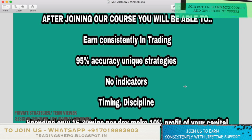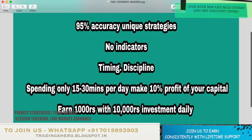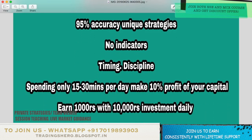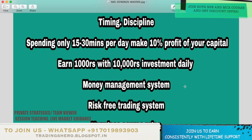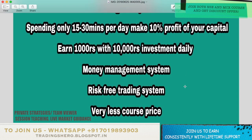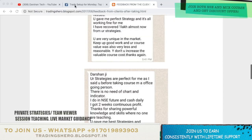Once you join us, you'll be able to earn consistently. I'll be teaching you 95% accuracy unique and secret strategies with no indicators, and how to pick stocks every day with good timing and discipline. By spending just 15 to 30 minutes per day, you can make 10% profit on your capital — that is 1000 rupees per day with an investment of just 10,000. I also provide a good money management and risk management system. Now let's talk about tomorrow's intraday trading setup.